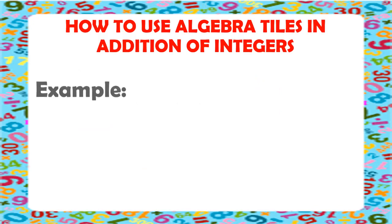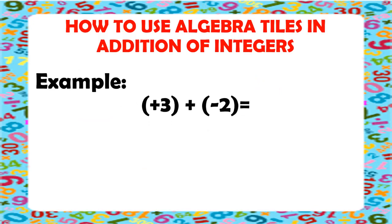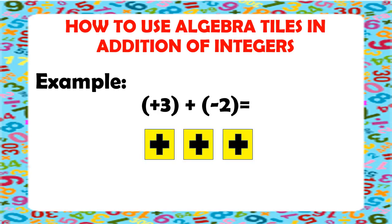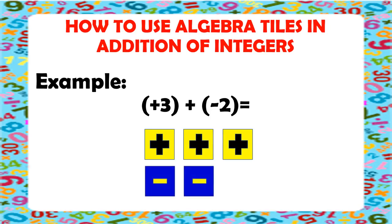Another example: positive 3 plus negative 2. Positive 3 means we have 3 yellow tiles. So, let's draw 3 yellow tiles. And negative 2 means we have 2 blue tiles. So, let's draw 2 blue tiles. We have all the tiles drawn in. Now, when we have a yellow tile and a blue tile, we will always make a 0 pair. So, let's make a 0 pair. One yellow tile and one blue tile will always make one 0 pair. So, this is one 0 pair.